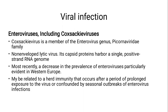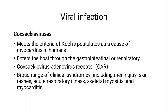Coxsackievirus meets the criteria of Koch's postulates as a cause of myocarditis. Koch's postulates mean that the Coxsackievirus can be found in every case of the disease, then the virus can be isolated in a pure culture, then the virus when injected into an animal model — most probably mice — it recapitulates the disease, and finally it can be recovered from the infected mouse. Coxsackievirus is one of the most heavily studied viruses in the etiology of myocarditis, and it meets all four criteria.